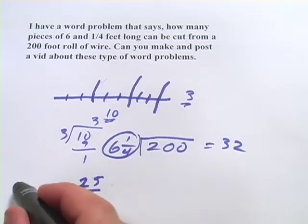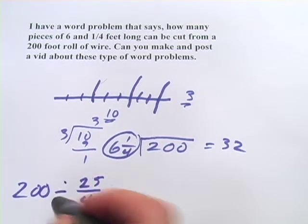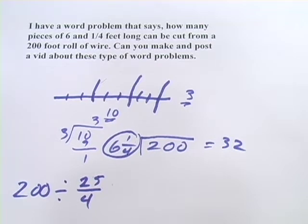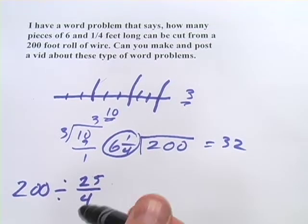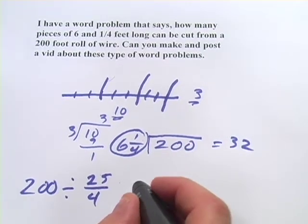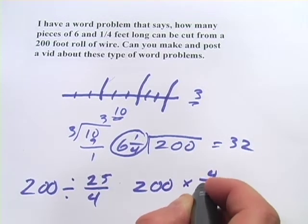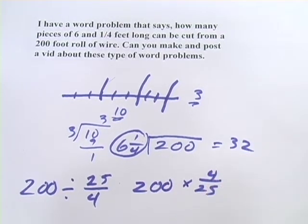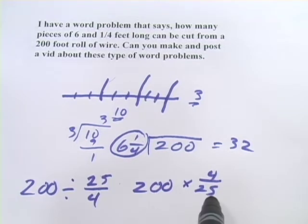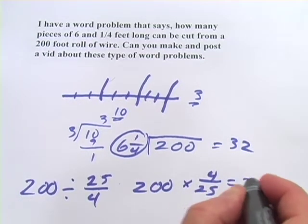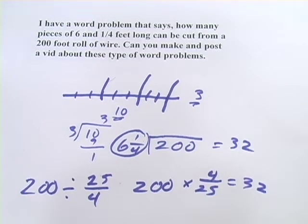And then we would want 200 divided by that, and maybe you remember from your work with fractions that to divide by a fraction you actually multiply by the reciprocal. So this would be multiplied by 4 over 25, and then when you take a number and you multiply it by a fraction, you multiply by what's on top, divide by what's on the bottom. If you do that, you'll find you get 32.